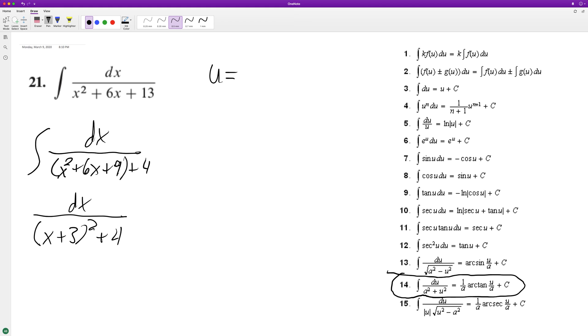u is equal to x plus 3, and du is just equal to 1. The nice thing about that is I don't have to do anything to get it equal to dx, so we can just put u in place of x plus 3 there.